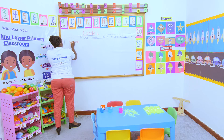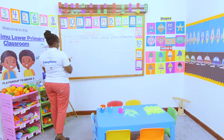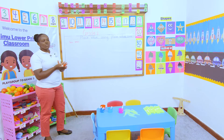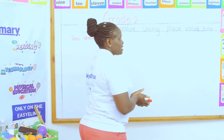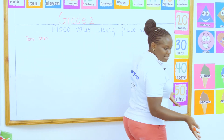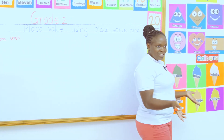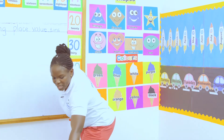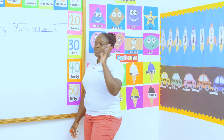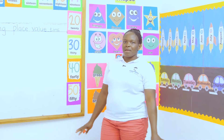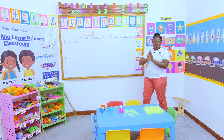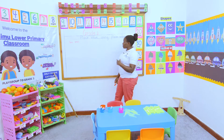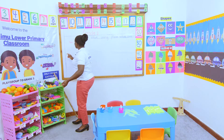Today we want to look at place value using place value tins. A tin is just a tin — not something funny or different. A tin can be this one, it can be a cocoa tin, it can be a Milo tin — any tin, provided it plays the role it's supposed to do.